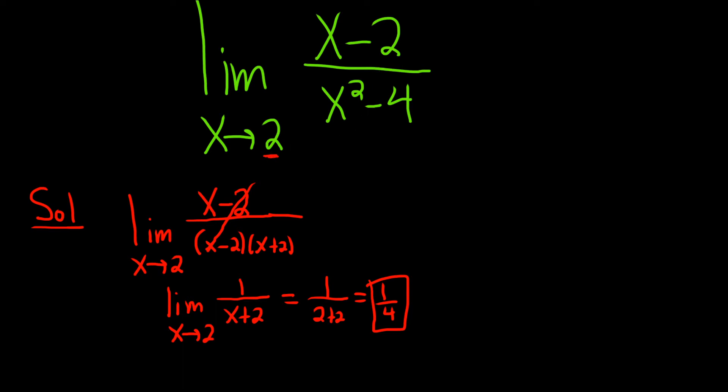In fact, let's go ahead and do that now. Let's say you plugged in 2. You would get 2 minus 2 over 2 squared minus 4. So you would get 0 over 0. So that's undefined. So then you resort to another tactic, which we did here.